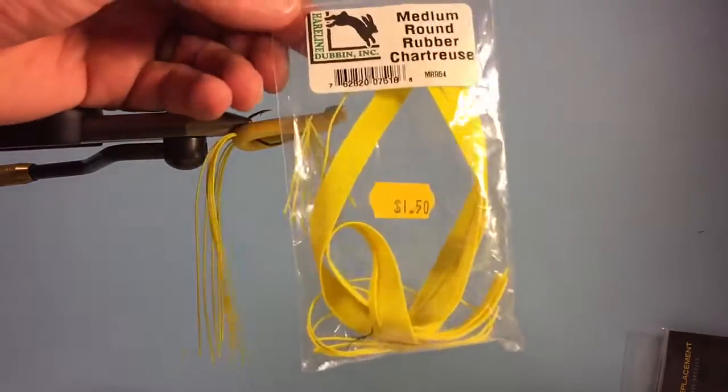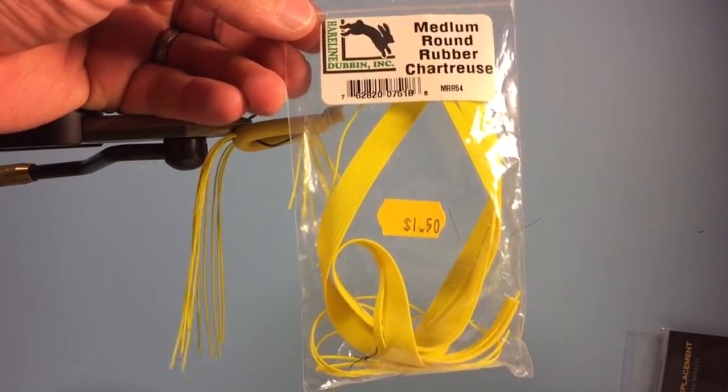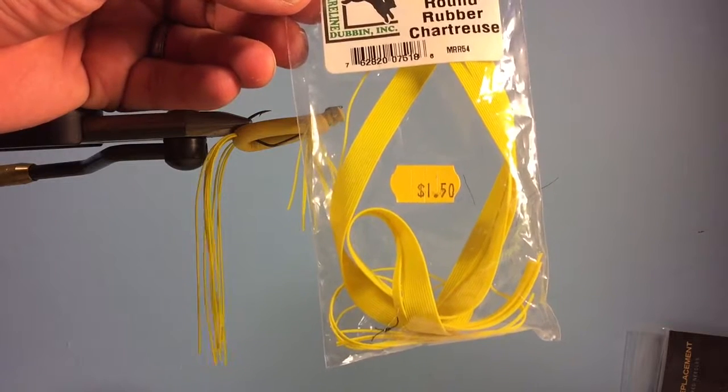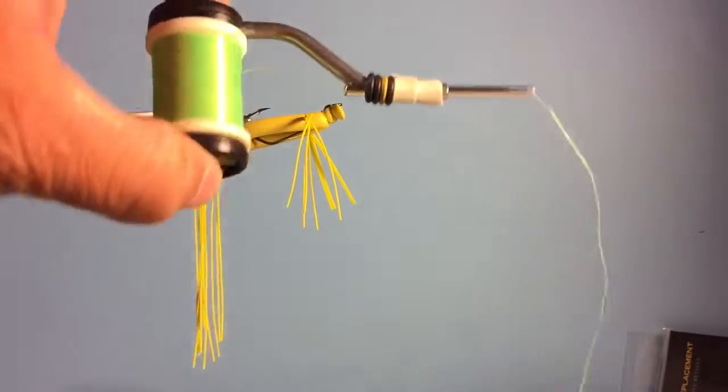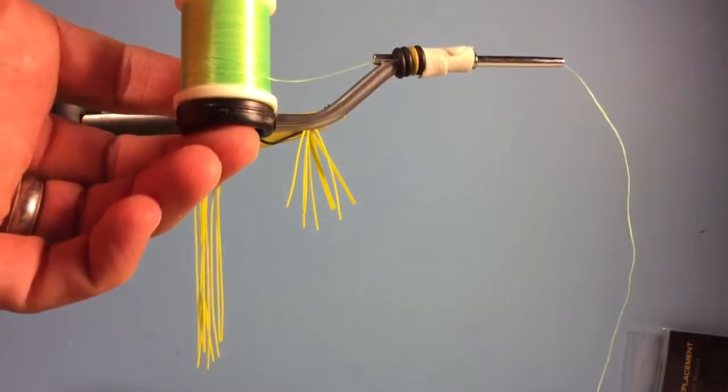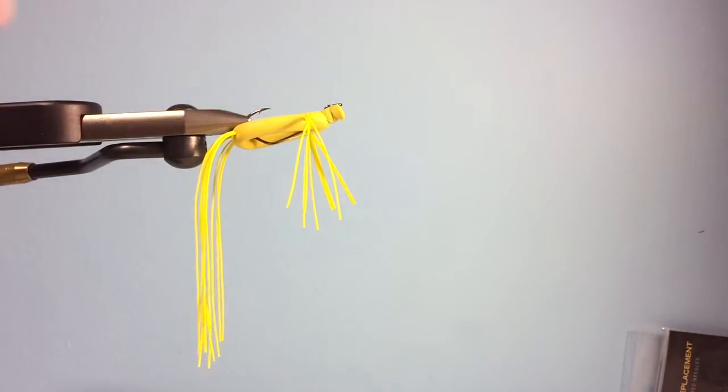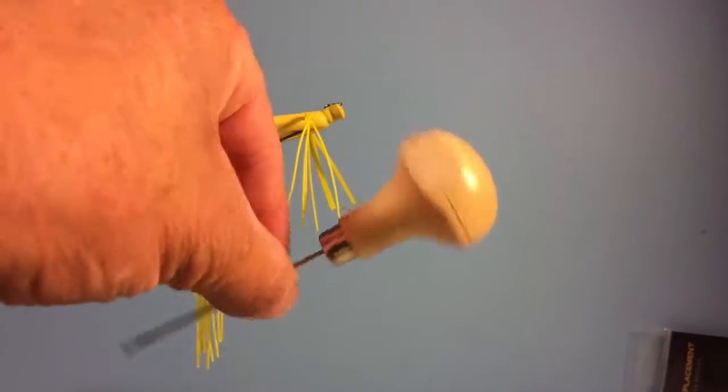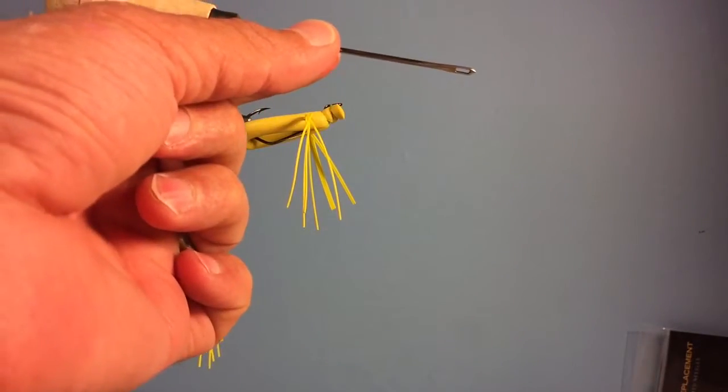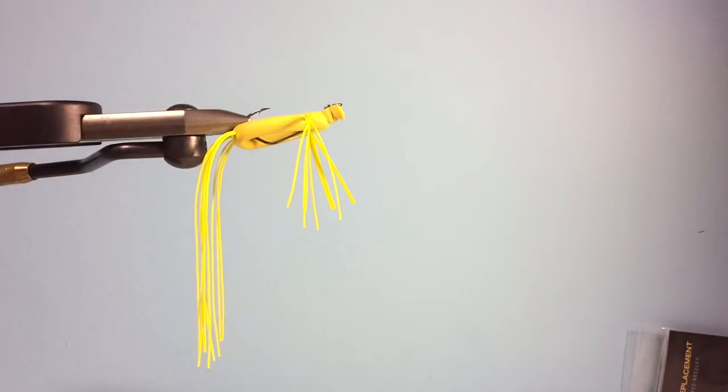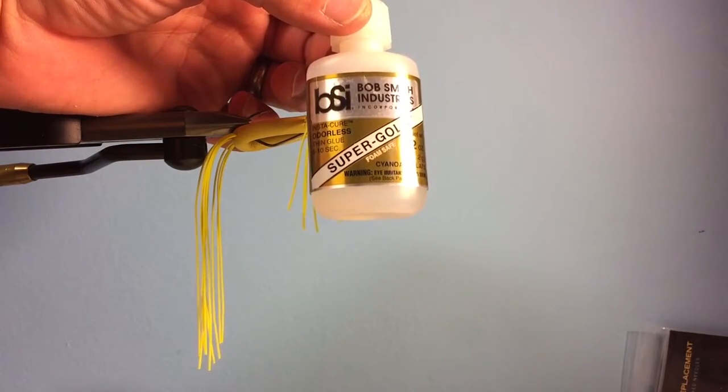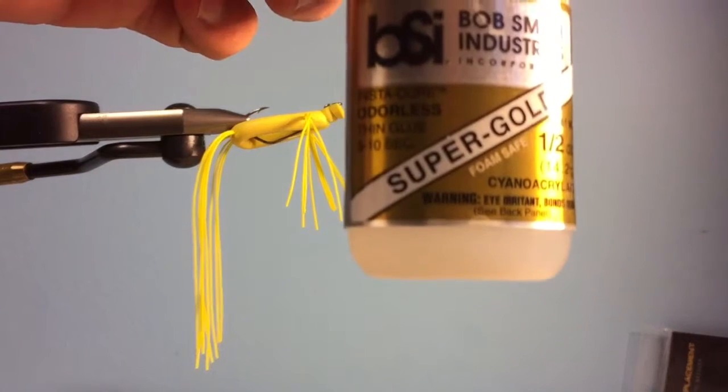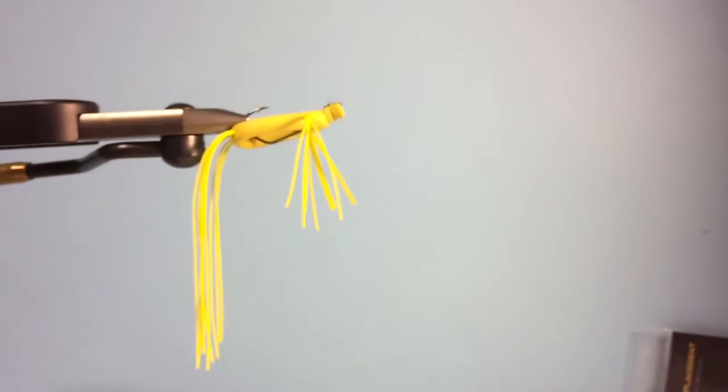Then you're going to need some round rubber legs, medium. These are chartreuse, or just bright yellow. For tying this, you're going to need thread, not too particular, chartreuse, 210 denier, Danville Flat Wax, Zutty's Leg Puller. Matt Zudwig designed this. It's basically a needle. The last ingredient is going to be Bob Smith Industries Super Gold Foam Safe. Foam Safe Super Glue. And if you want epoxy, I'm going to show you how to tie this.